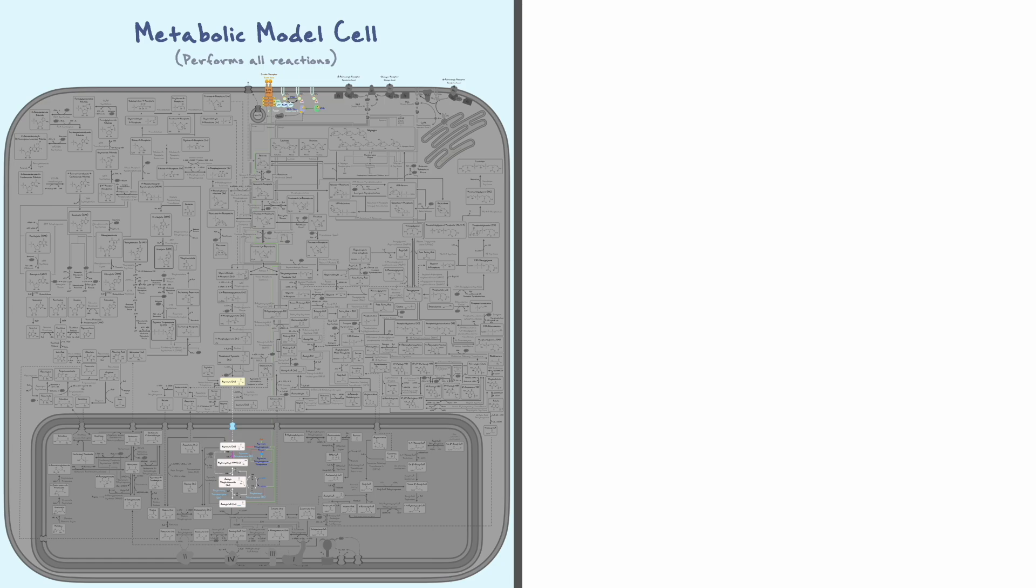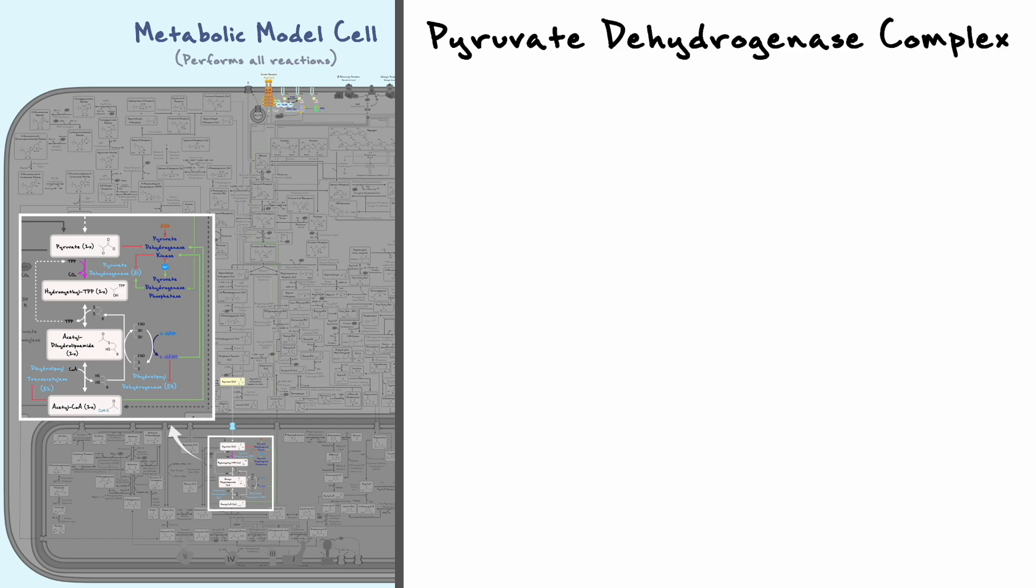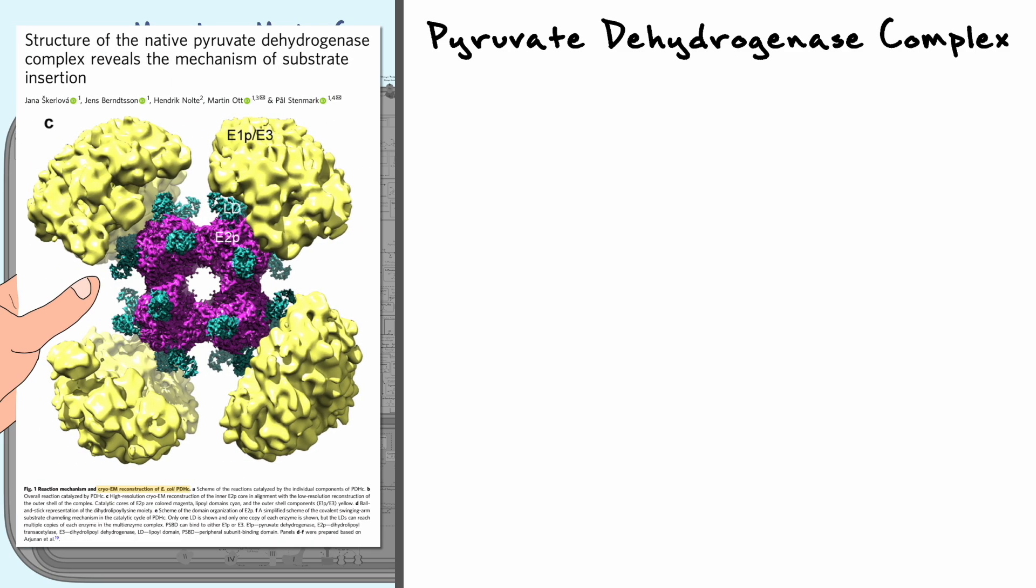When the pyruvate is in, this is where it can get converted to acetyl-CoA in a pretty elaborate reaction sequence catalyzed by the pyruvate dehydrogenase complex, or simply PDC. When it comes to the enzymes that we'll cover in this video, the PDC is definitely one of the most interesting ones as it operates as a multi-enzyme complex. If we take a look at the cryo-electron microscopy reconstruction of the PDC in E. coli bacteria, you can see its multiple subunits all covalently bound together. There are three types of subunits that can be found in this protein: E1, E2, and E3, and there are multiple copies of each that together make up the PDC.